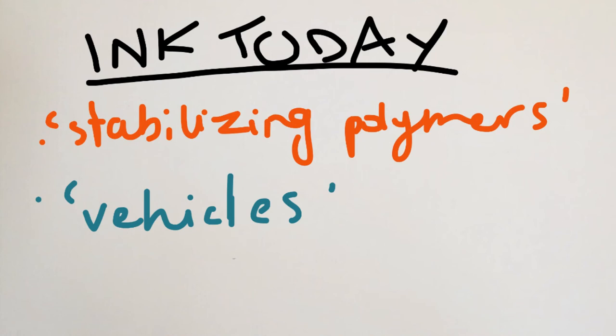Ink also, depending on its intended use and type, contains additives such as waxes, lubricants, surfactants, and drying agents, all of which are called vehicles and may help to bind the ink to the surface.